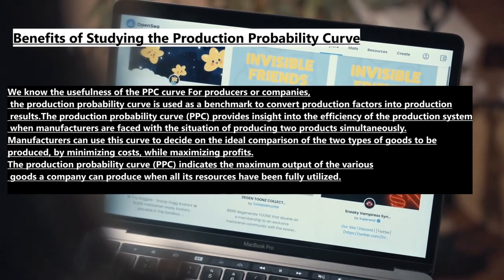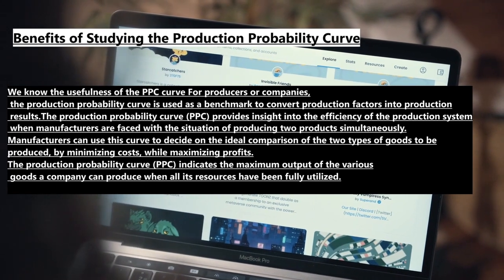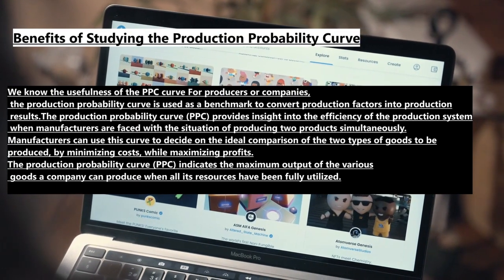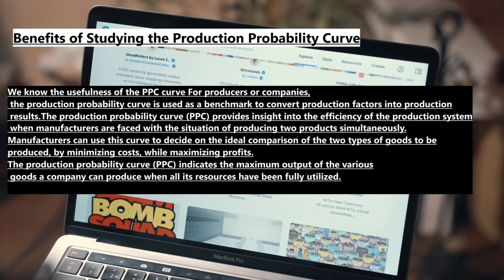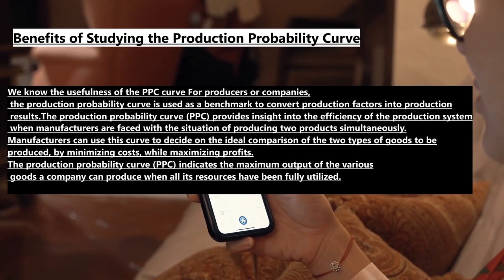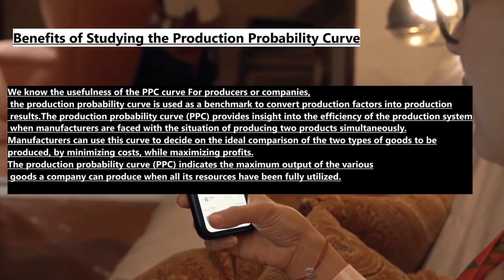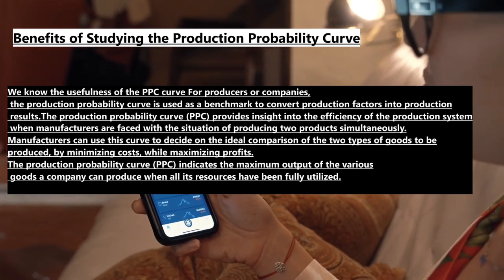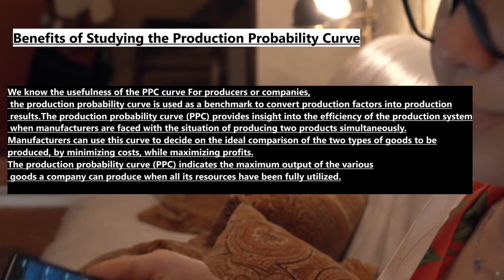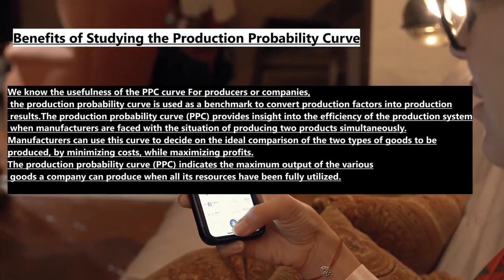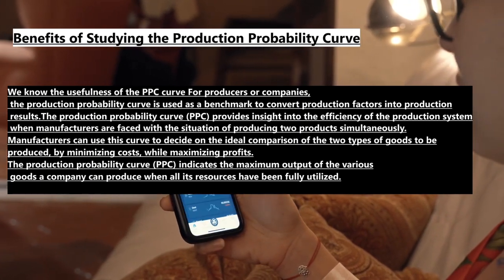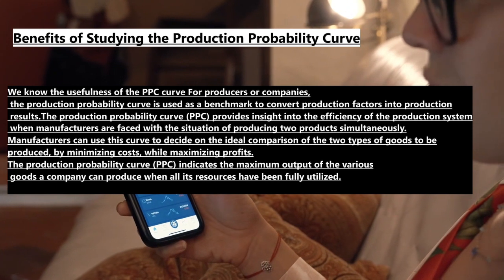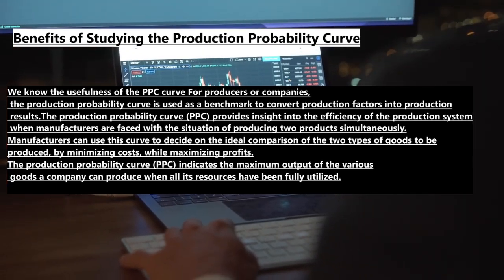Benefits of studying the production probability curve. We know the usefulness of the PPC curve for producers or companies. The production probability curve is used as a benchmark to convert production factors into production results. The production probability curve provides insight into the efficiency of the production system when manufacturers are faced with the situation of producing two products simultaneously. Manufacturers can use this curve to decide on the ideal comparison of the two types of goods to be produced by minimizing costs while maximizing profits. The production probability curve indicates the maximum output of the various goods a company can produce when all its resources have been fully utilized.